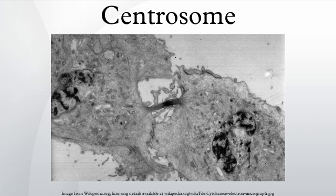Aberrant numbers of centrosomes in a cell have been associated with cancer. Doubling of a centrosome is similar to DNA replication in two respects: the semi-conservative nature of the process and the action of CDK2 as a regulator. But the processes are essentially different in that centrosome doubling does not occur by template reading and assembly. The mother centriole just aids in the accumulation of materials required for the assembly of the daughter centriole.